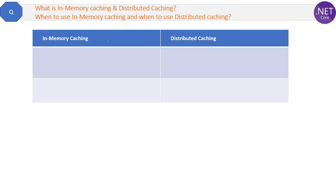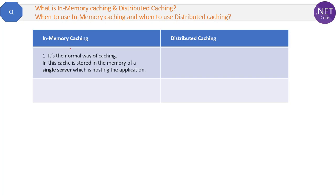In-memory caching is the normal way of caching — the basic caching we know is in-memory caching. In this type, the cache is stored in the memory of a single server which is also hosting the application. So the server hosting the application is also storing the cache — that is in-memory caching.